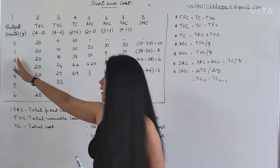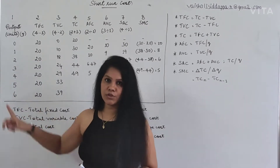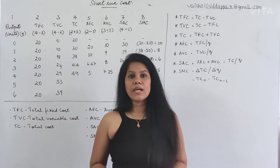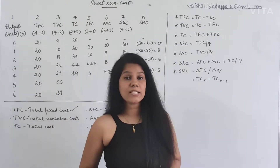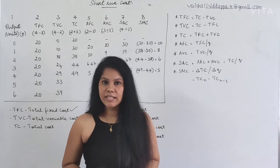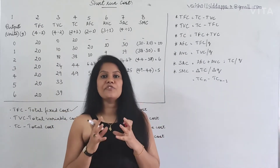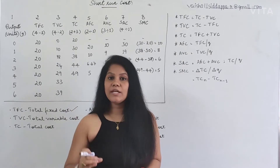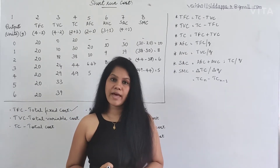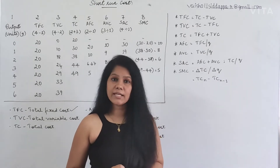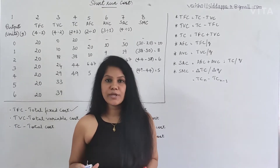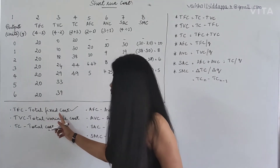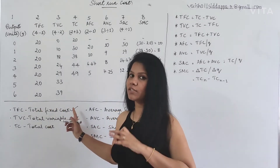The first column is units - the quantity of what we are producing, that is the output. The second one is TFC, which is Total Fixed Cost. That means the total expenditure what we are doing on the fixed factors. The money what we are spending on fixed factors - it can be land, capital, or anything that is considered as fixed, which is not going to change. That will be called as Fixed Cost.